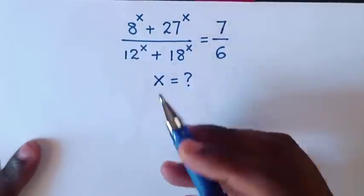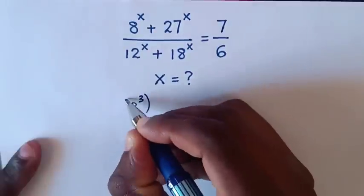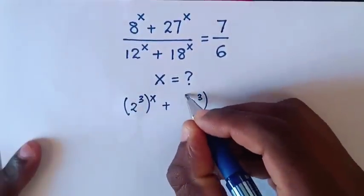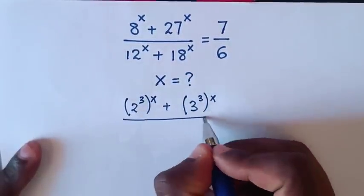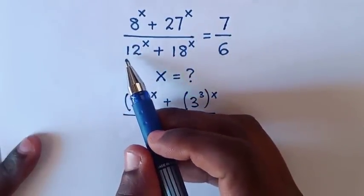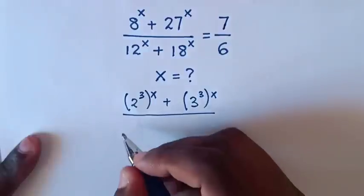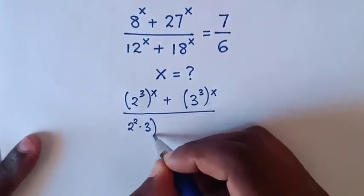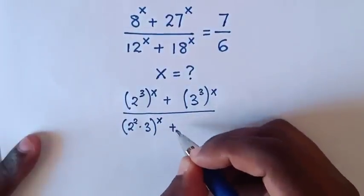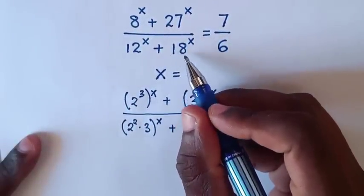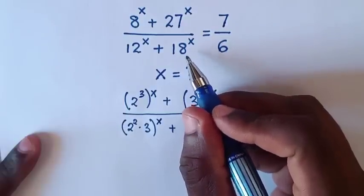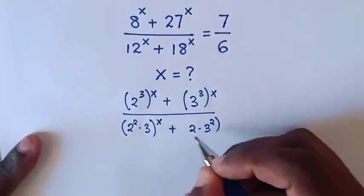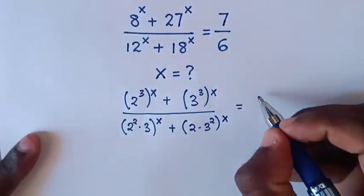First, rewrite the bases: 8 is the same as 2^3, and 27 is the same as 3^3. For the denominator, 12 is the same as 4 times 3, where 4 is 2^2, so 12 = (2^2 × 3). And 18 is the same as 2 times 9, where 9 is 3^2, so 18 = (2 × 3^2). We rewrite the full equation using these factored bases.